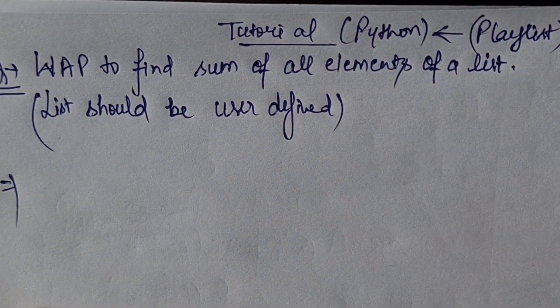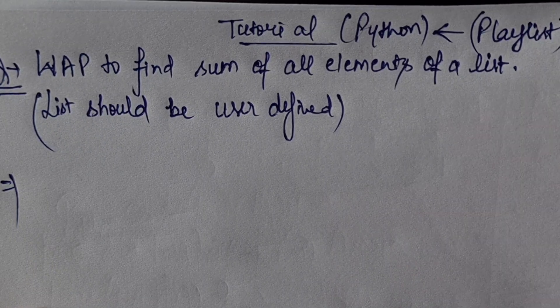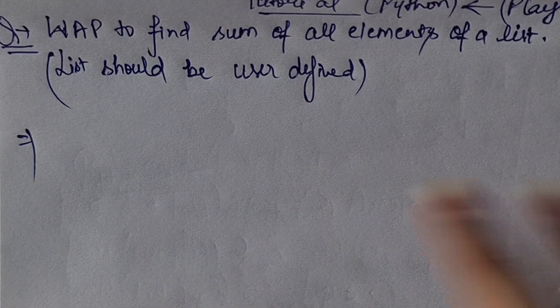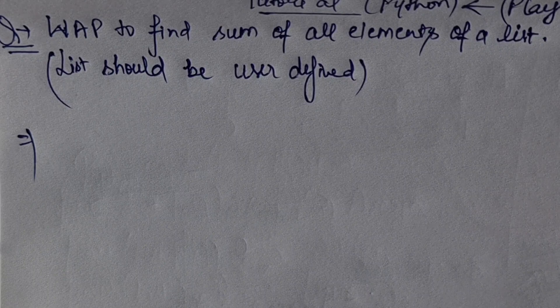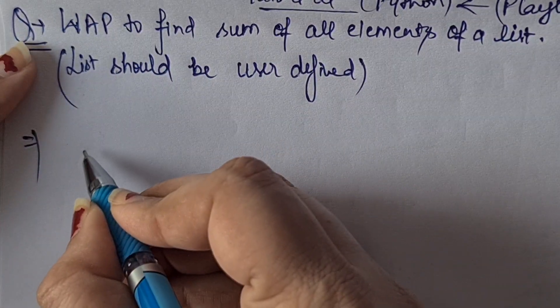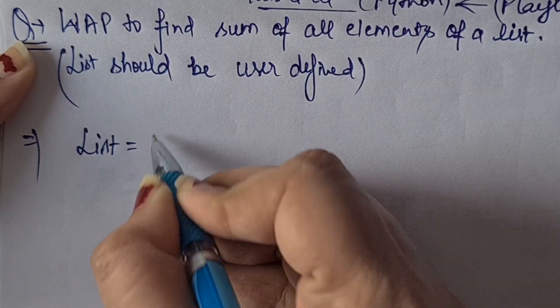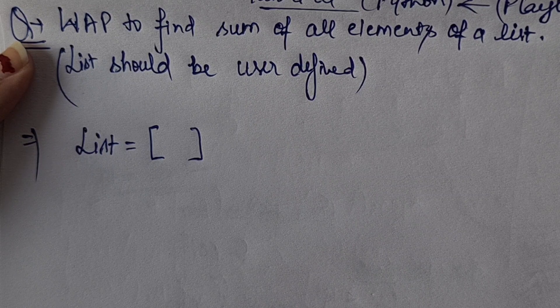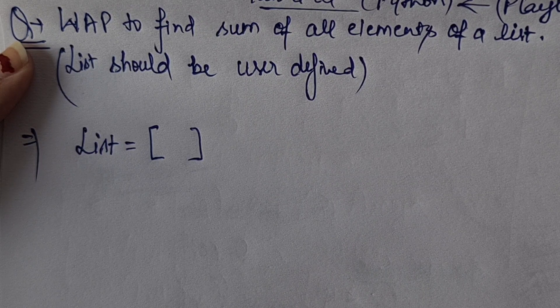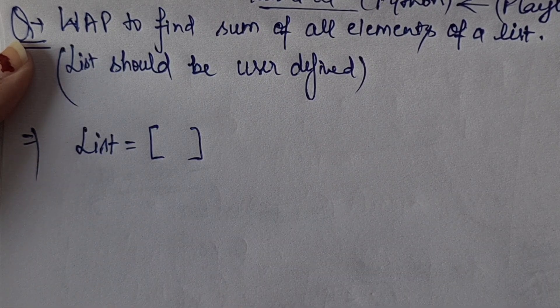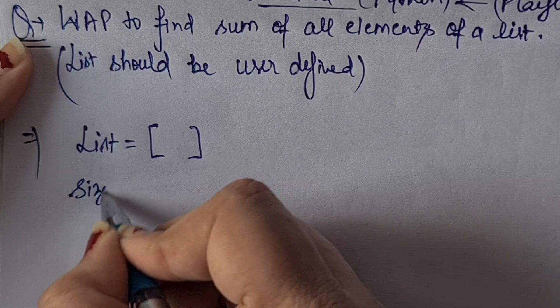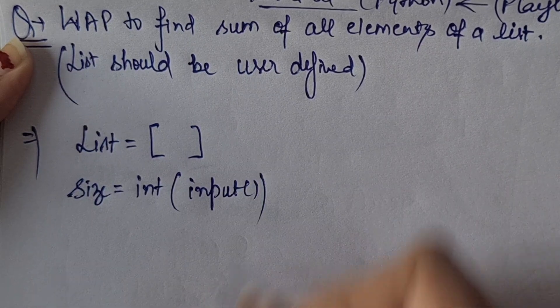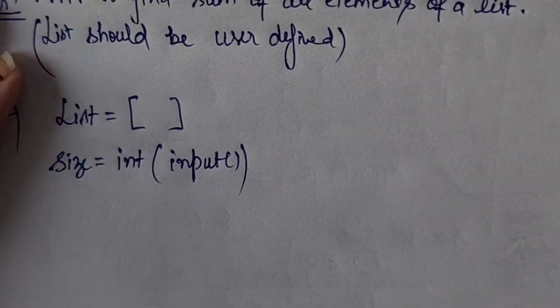The list should be user defined, means you can create according to your choice. So first I will do user defined, after that I will make a normal case. User defined list will be an empty list because user will insert values. So list equals empty list. Then the size should be integer, the size means number of indices, the length of the list.